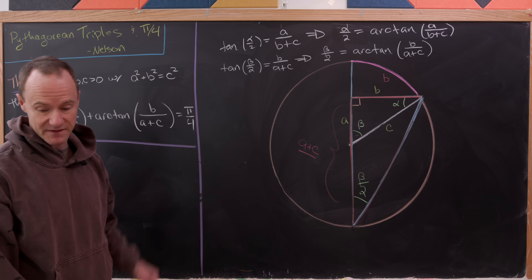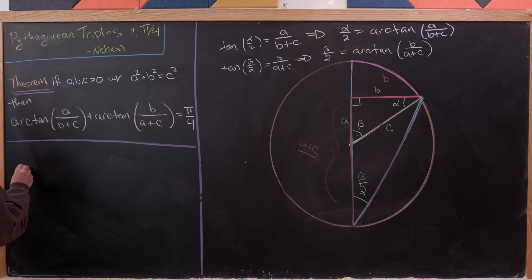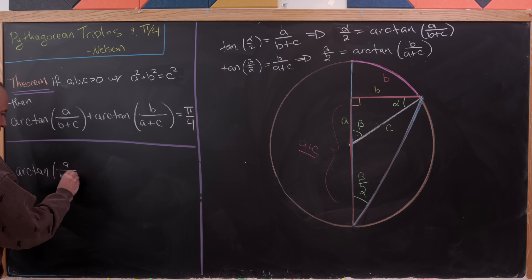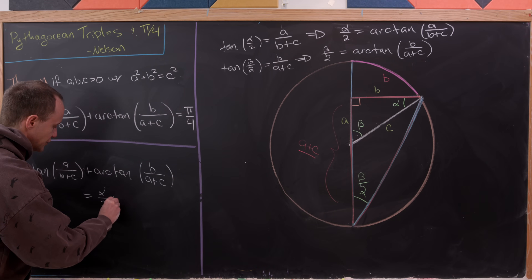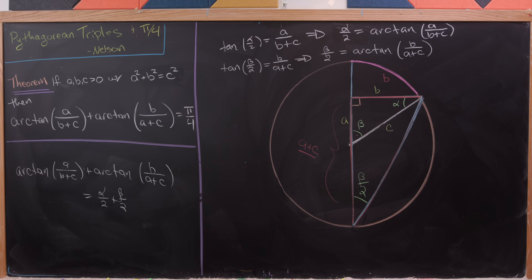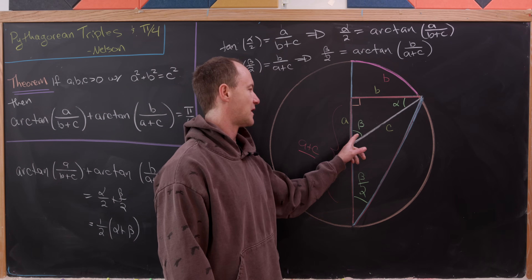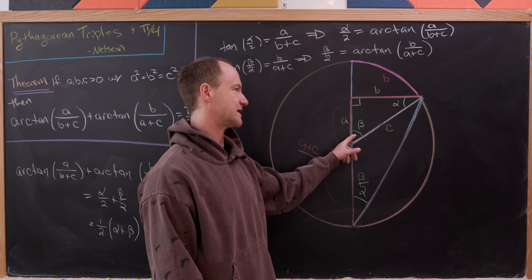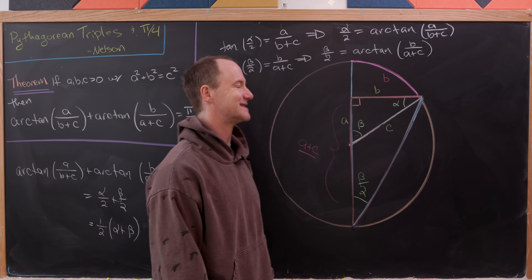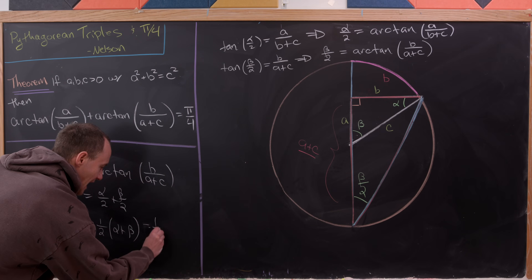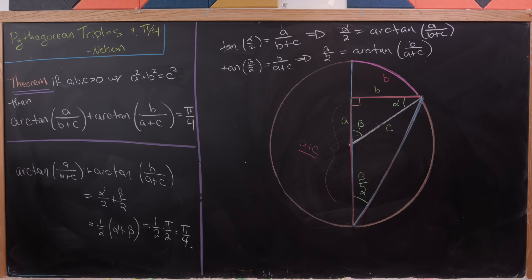Now we're essentially done. The sum arctan(a/(b+c)) plus arctan(b/(a+c)) equals alpha over 2 plus beta over 2, which equals one-half times (alpha plus beta). But alpha plus beta must be pi over 2, since the three angles of a triangle sum to pi. So the sum equals one-half times pi over 2, which is pi over 4. That's exactly what we wanted — the theorem is proved.